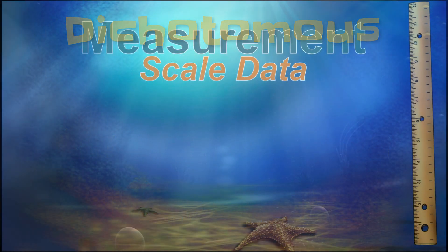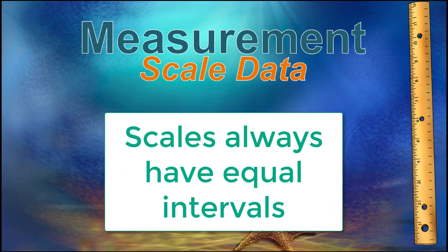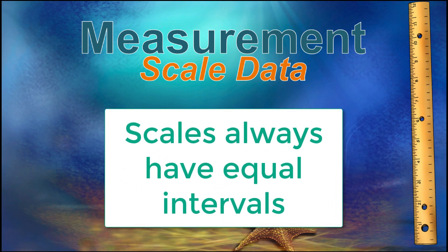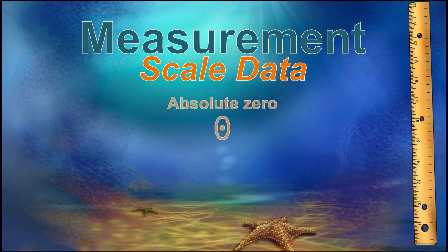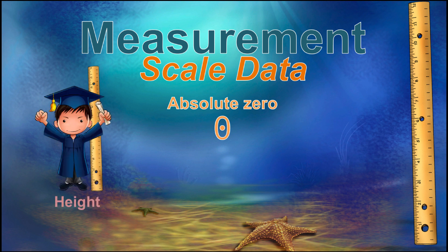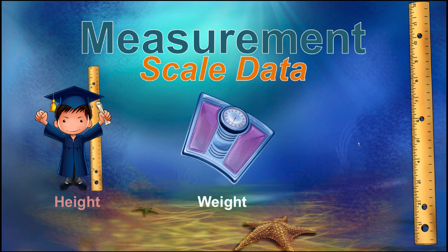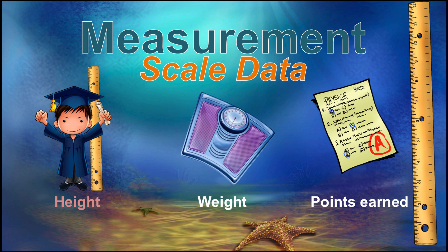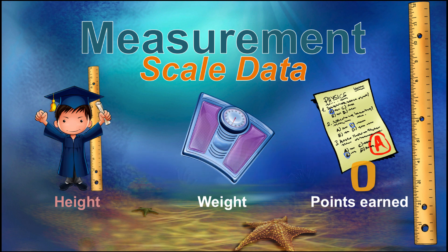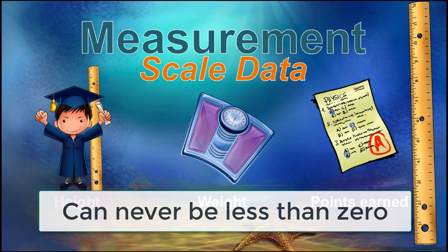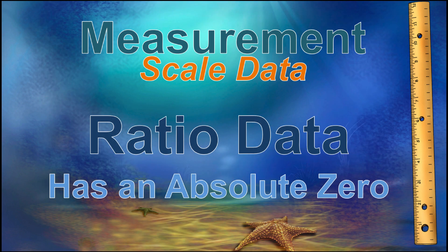Measurement variables use scales that have equal intervals. We distinguish these scales by whether or not they have a meaningful zero point. If you are measuring height in inches, or weight in pounds, or points earned on a test, each of these scales has an absolute zero. You can have zero inches, zero pounds, or zero points, but you cannot have less than zero. These are called ratio data.